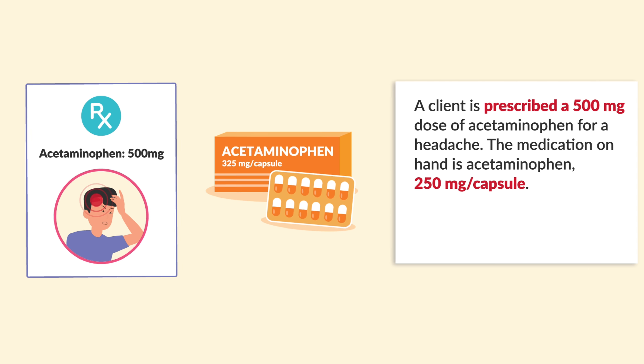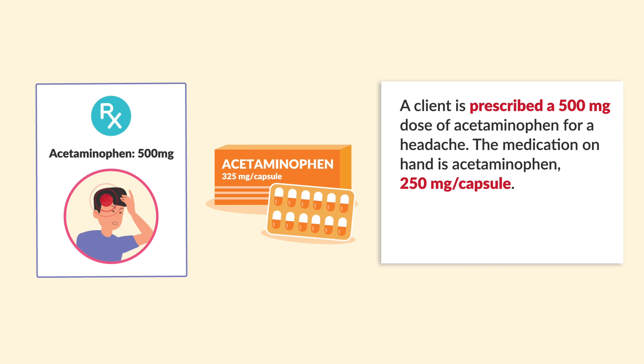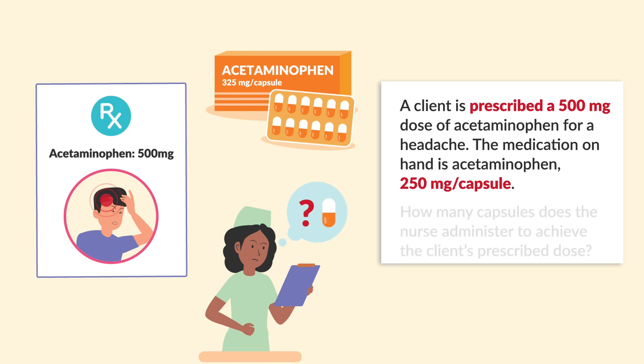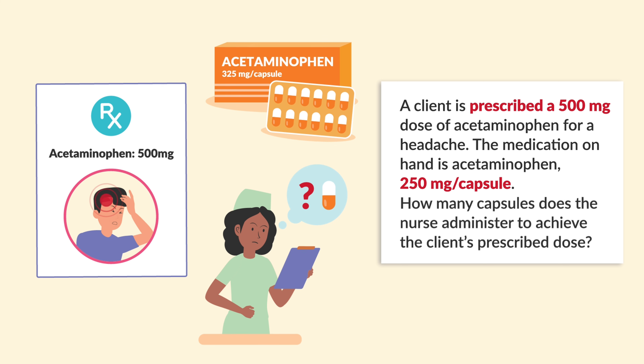For example, a client is prescribed a 500 milligram dose of acetaminophen — that's Tylenol — for a headache. The medication on hand is 250 milligrams per capsule. How many capsules does the nurse administer to achieve the client's prescribed dose?